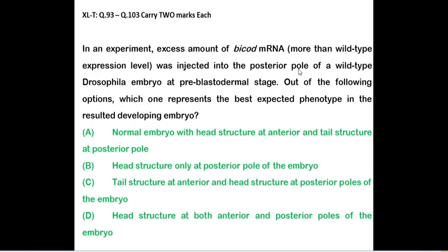In an experiment, excess amount of bicoid mRNA more than wild type expression level was injected in a posterior pole of wild type Drosophila embryo, pre-blastoderm stage. Out of which option, which one represents the best expected phenotype in the resulting developmental embryo? Option D is correct. Since in the wild type already, the bicoid mRNA will be expressed at anterior portion.